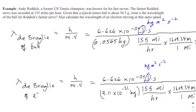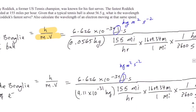This problem illustrates how to use the de Broglie wavelength equation. This particular example talks about a very fast ball hit by Andy Roddick, who used to be one of the fastest servers in US tennis. One of his fastest serves is recorded at 155 miles per hour. Given the weight of a tennis ball, what's the wavelength of that ball? To calculate it, you plug it into the de Broglie wavelength equation: lambda equals h over mv, where v is velocity and h is Planck's constant.